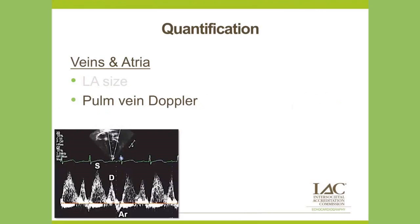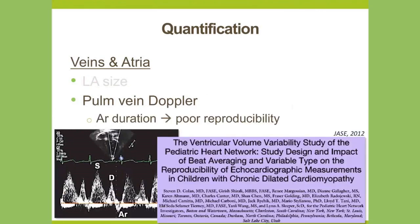Pulmonary vein Doppler interrogation is also useful, particularly as it relates to left ventricular diastolic function and mitral regurgitation. However, a study from the Pediatric Heart Network — an NIH-funded research infrastructure for multi-center studies in pediatric cardiology and cardiac surgery — showed that pulmonary vein Doppler reversal during atrial systole has one of the highest percentage errors for intra- and inter-observer variability and reproducibility, making it not a great measurement to use in daily practice.